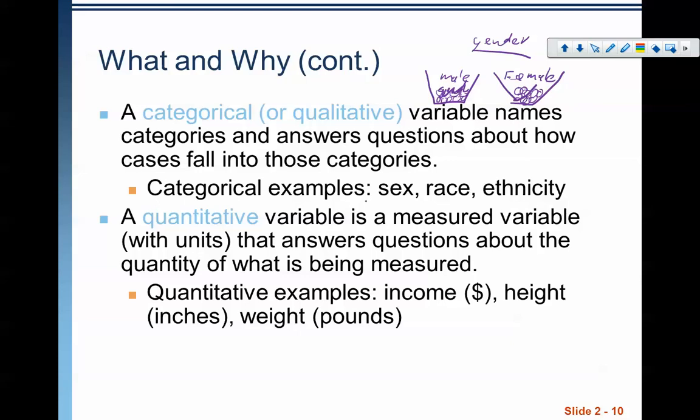Whereas a quantitative variable is a measured variable with units that answers questions about the quantity of what is being measured. For example, income. I can't put income in a bucket. Income is continuous. If we were to put it on a graph, we would have zero to a hundred thousand dollars a year. We have this continuous amount of people making everything in between. It's not a large bucket where we're one thing or the other; we fit on a continuum. Height, same way. Weight, same way.